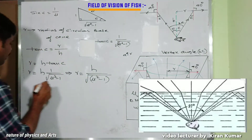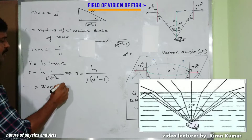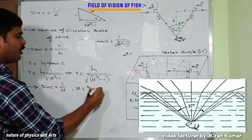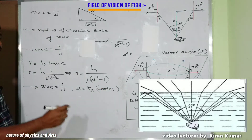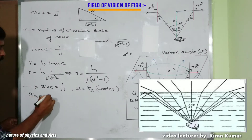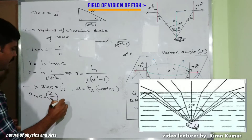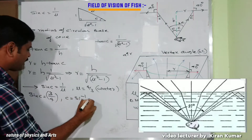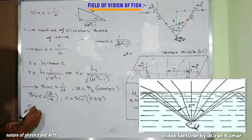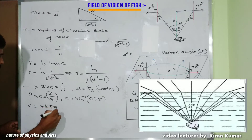Now for the applications. First, calculating the critical angle: sin C = 1/μ, where μ = 4/3 for water. So sin C = 1 ÷ (4/3) = 3/4. Therefore C = sin⁻¹(0.75) = 48.59 degrees.